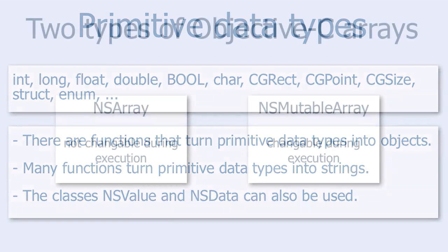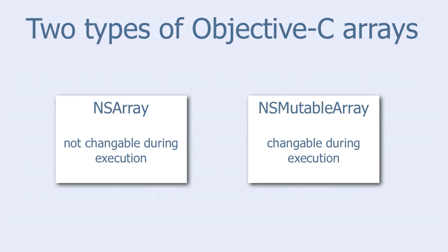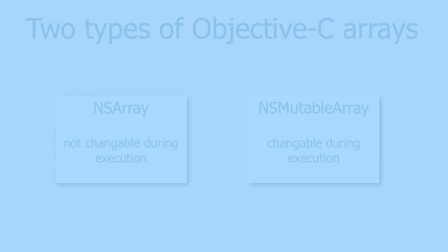There are two types of Objective-C arrays: NSArrays, which are not changeable during execution, and NSMutableArray, which are changeable during execution. As we will see, both types of arrays are usable. Let's go to Xcode and see how to use Objective-C arrays.